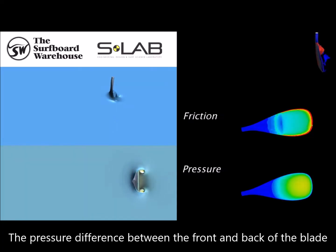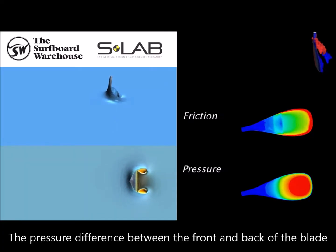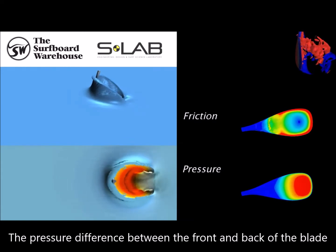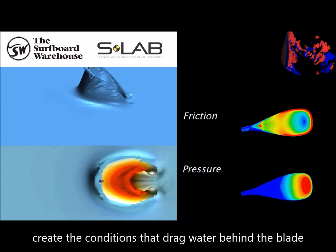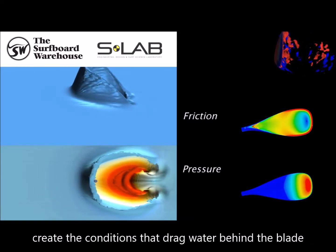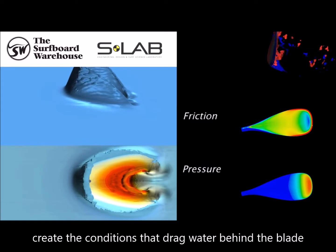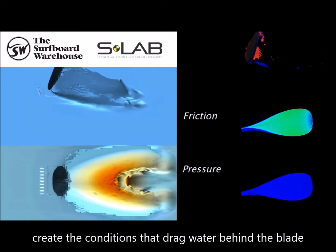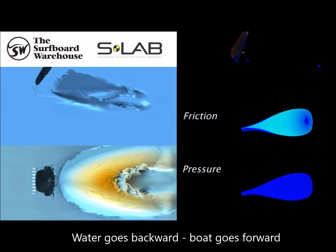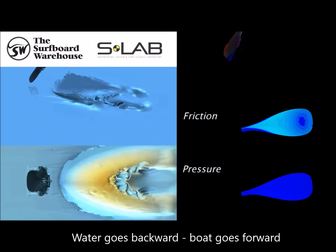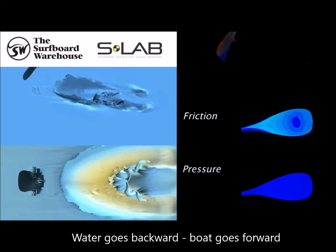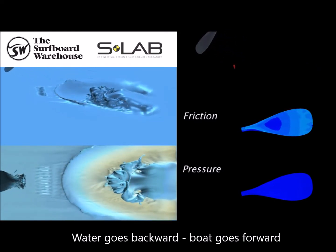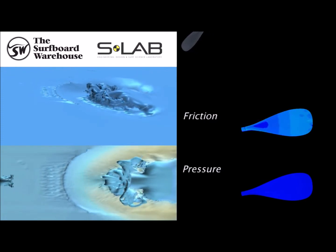This computer simulation shows the water being pushed at the front of the blade and the water being dragged into the void behind the blade. The momentum is equal to the mass of the water moved in front of the blade and in the void behind the blade, multiplied by the velocity of the water.